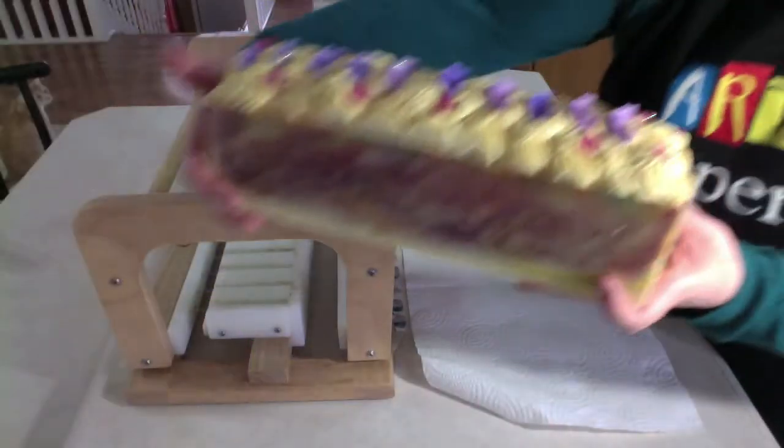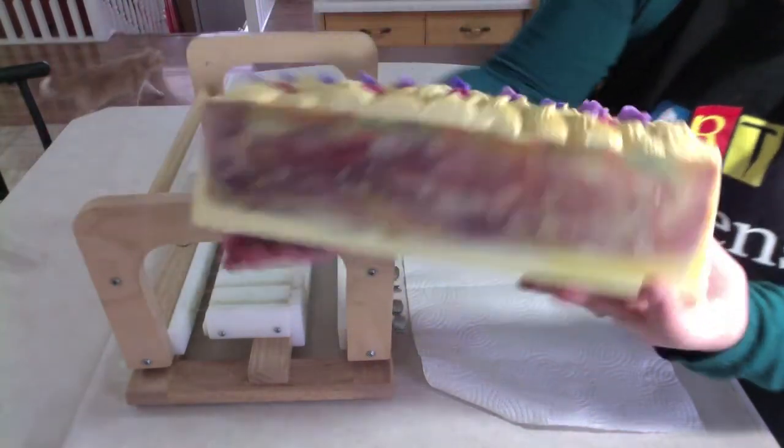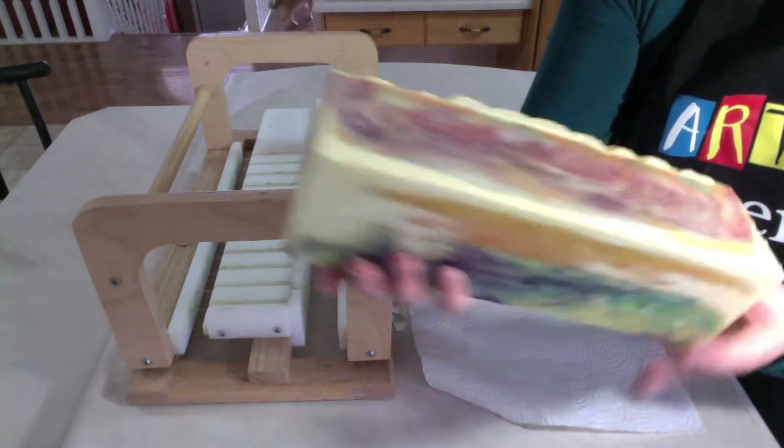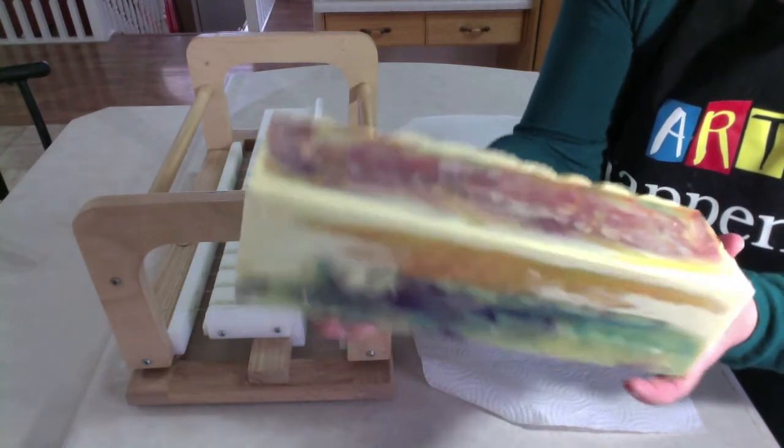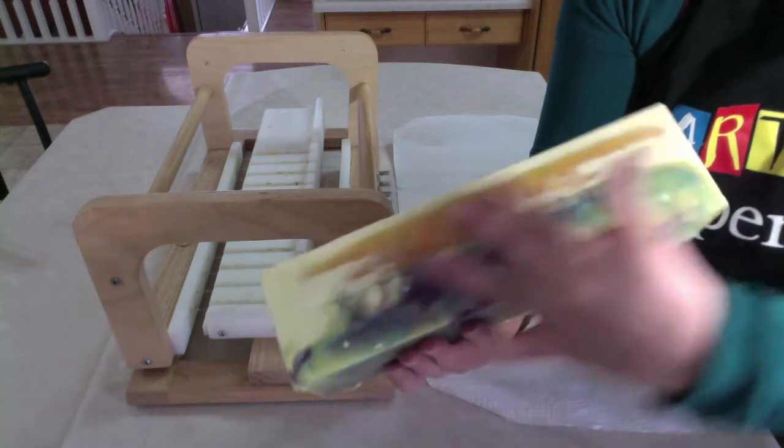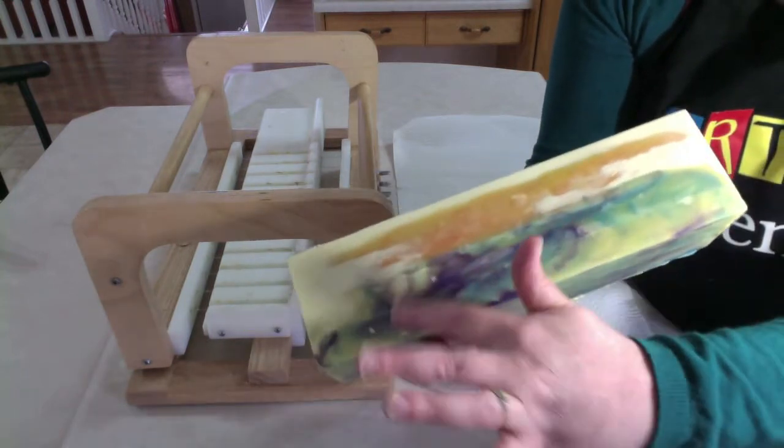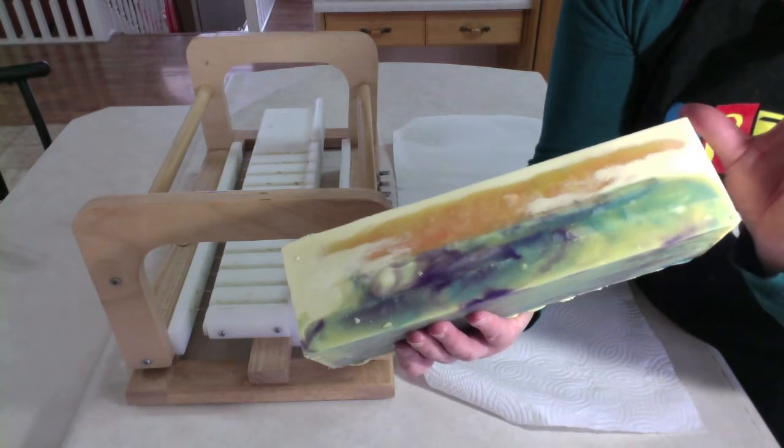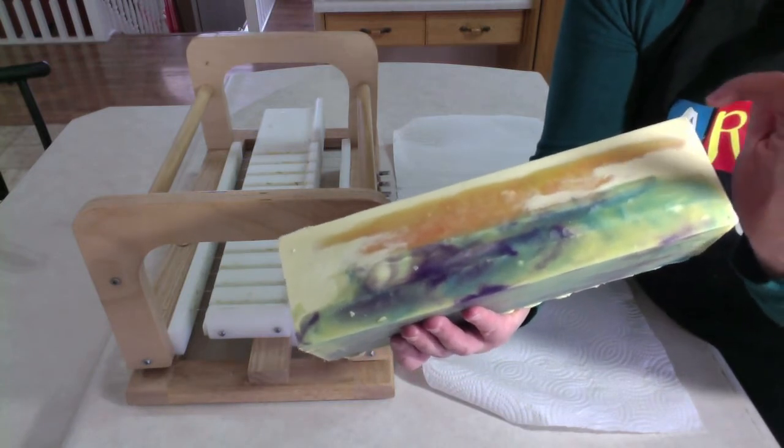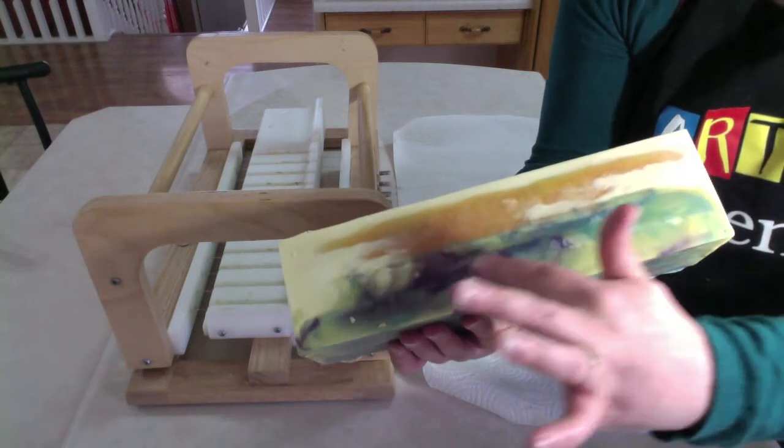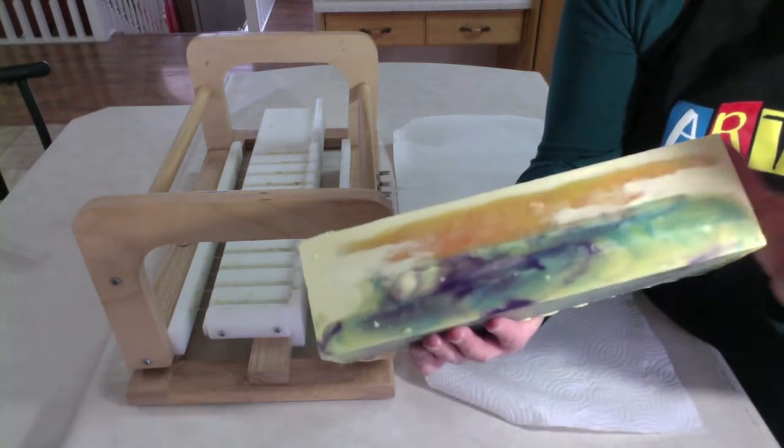Here is our finished loaf. Before we cut it, I'll just show you the edges. Everything's very nice and straight. No wrinkles from freezer paper because we didn't need freezer paper. It came off quite easily. What I did was I'd start one edge and you could see the air pocket where the acrylic was releasing from the soap. And I was very patient.